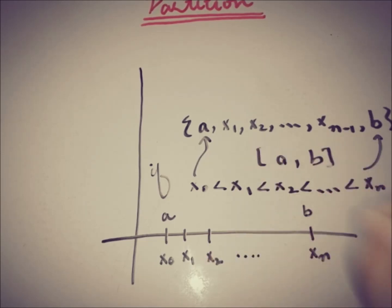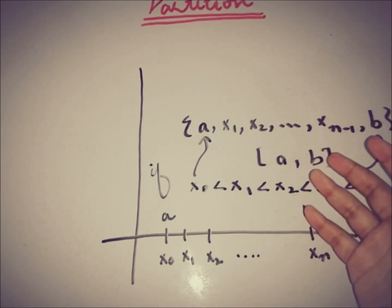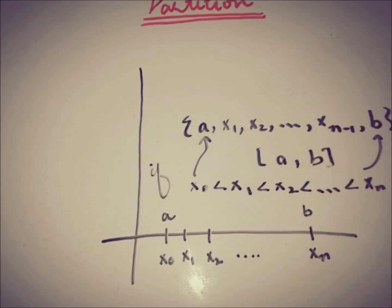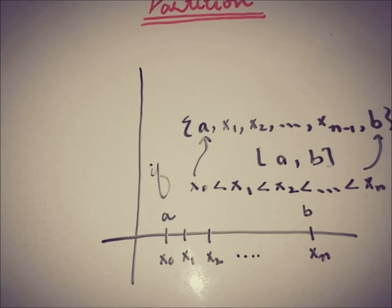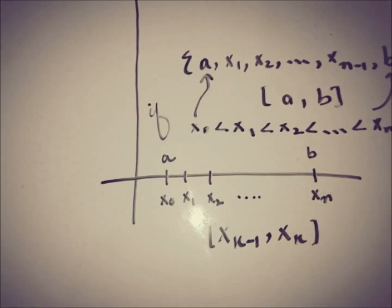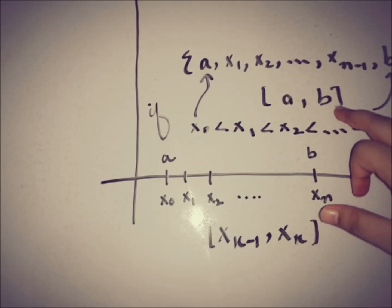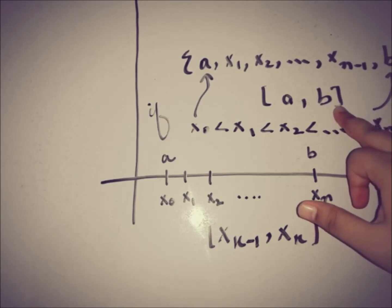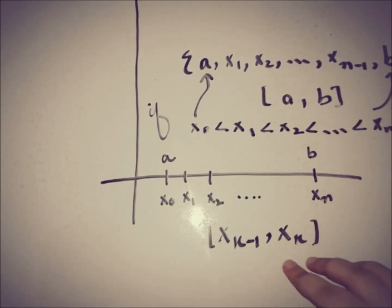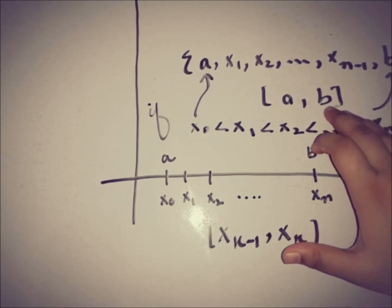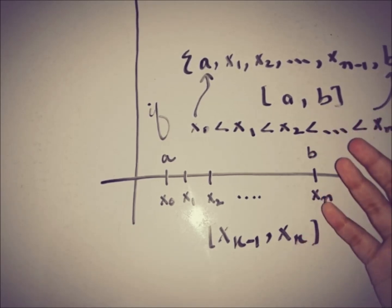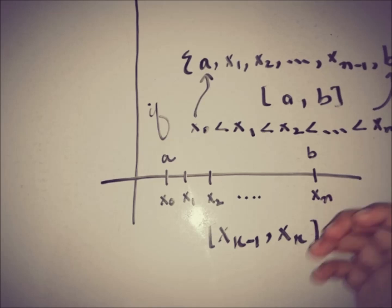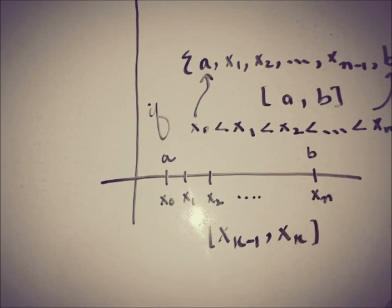Given a partition of [a, b], we can define a sub-interval. The k-th sub-interval of the partition is [xk-1, xk]. We can extract any sub-interval of our choice from any given partition.